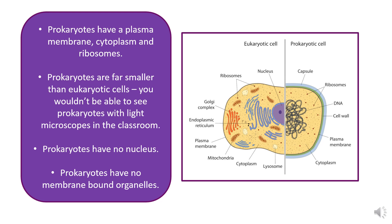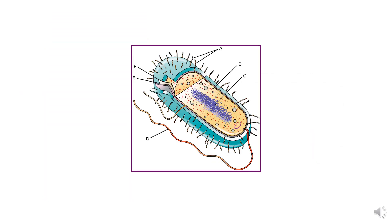Prokaryotes have no membrane-bound organelles. This often comes up in exam questions: if you have to state the difference between eukaryotic and prokaryotic cells, you won't get multiple marks for listing mitochondria, endoplasmic reticulum, and Golgi separately. You must refer to them collectively as membrane-bound organelles — mitochondria, Golgi, endoplasmic reticulum, and chloroplasts are all membrane-bound — so don't list them as individual marking points.